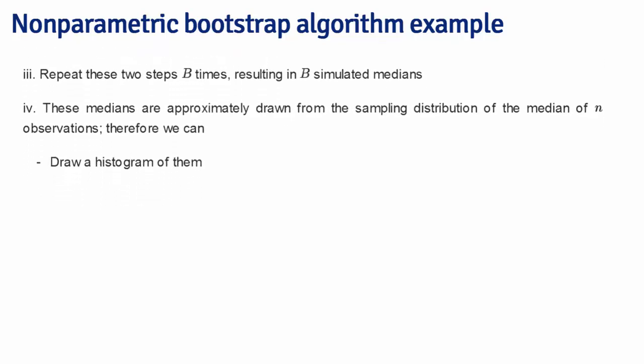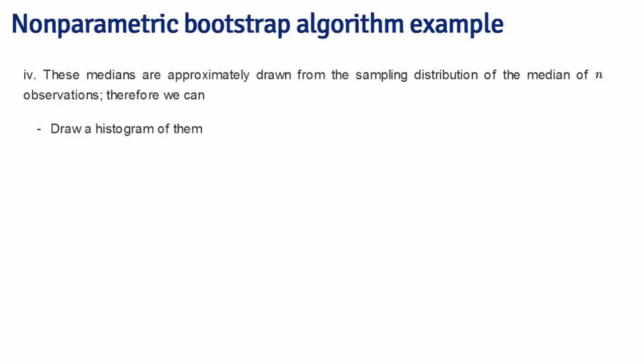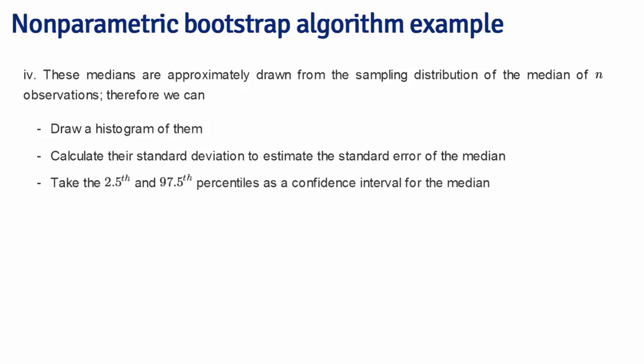When we do this, what we can do with our Bootstrap resamples is the first thing is you always want to draw a density estimate or a histogram of them. But you also could calculate their standard deviation, which will give you a standard error of the median, an estimated standard error of the median. You could take quantiles of your Bootstrap resampled medians, say for example, the 2.5th and 97.5th quantile, and those form a so-called Bootstrap confidence interval for the median. So notice what we've done in this process is we've figured out a very easy way to develop a confidence interval for the median without having to do anything like fancy asymptotics.